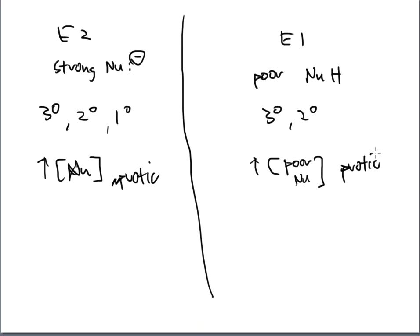In the next video we're going to go through more examples, determining whether reactions are E2 or E1. Eventually we need to talk about all four variants — SN2, SN1, E2, and E1 — and figure out which one will proceed over another. That discussion will come at the end of this lecture module, but for now we're taking it step by step.